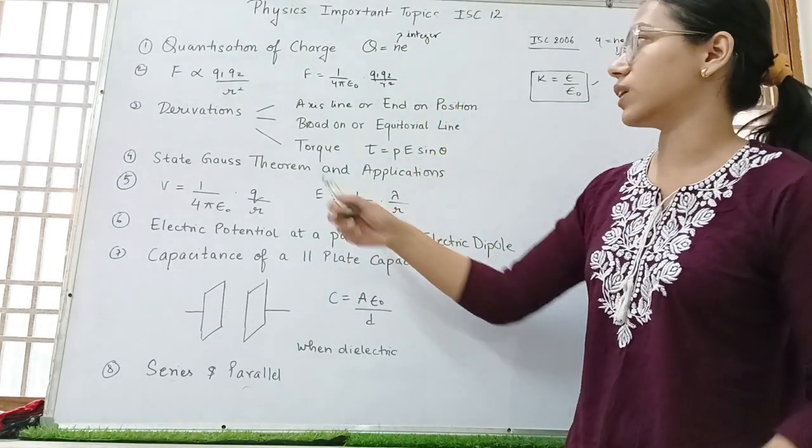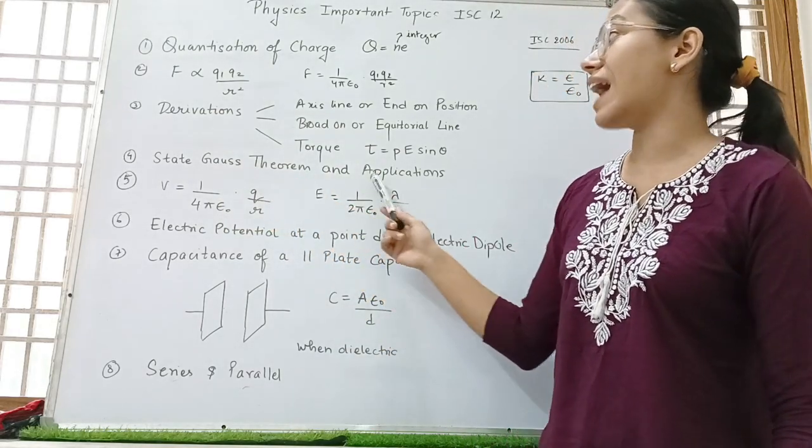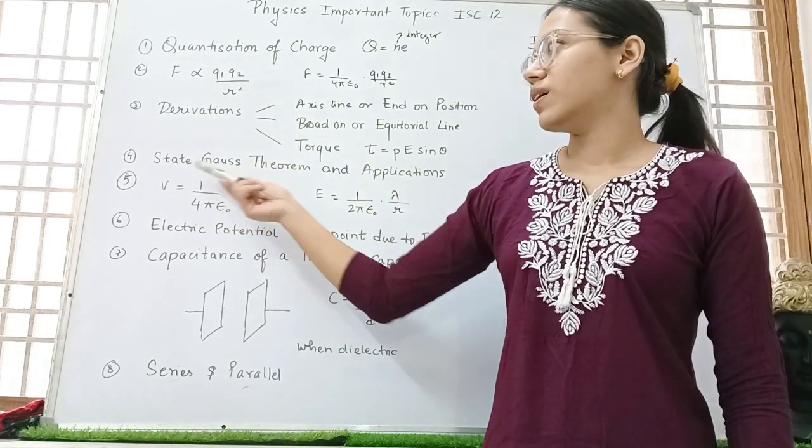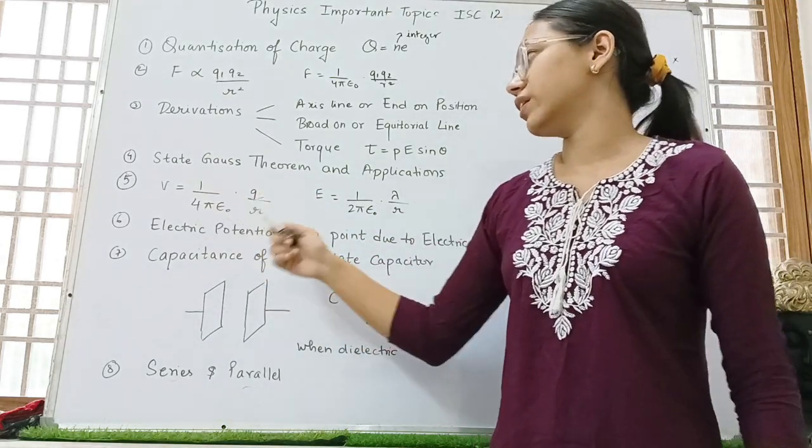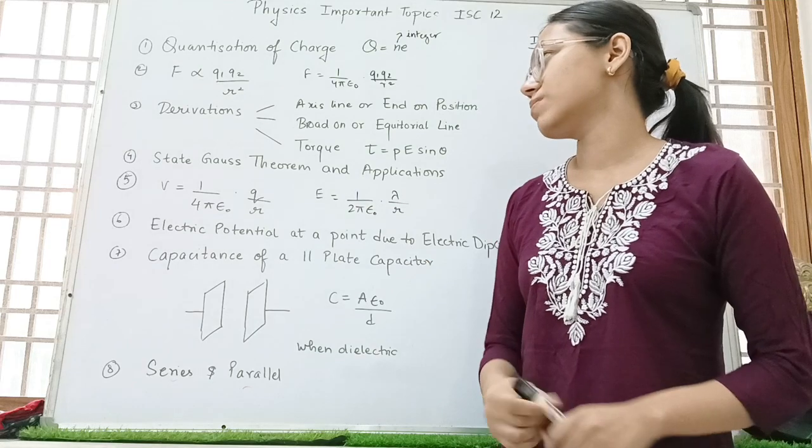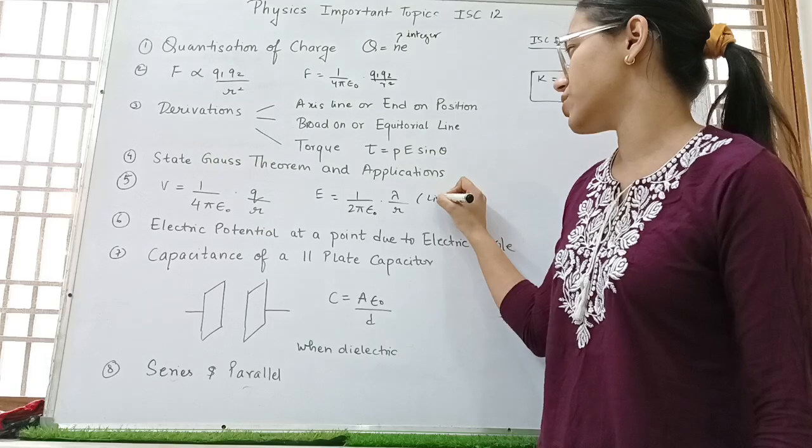Then we have derivations. These three are very important. Then state Gauss theorem and its applications too. Learn the statement of Gauss theorem which is very easy. Then you can see these two formulas. And derivation for this is also the right answer. So this is for the line charge.